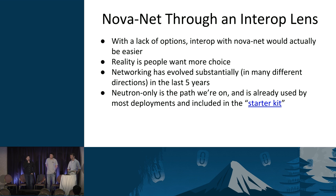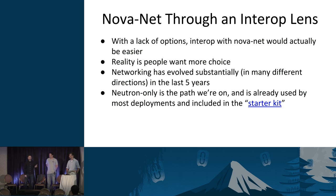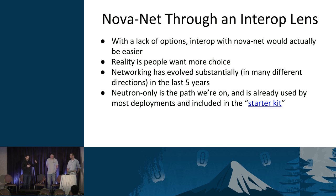From an interop perspective, Nova Network was actually really good — which is part of what makes this whole thing difficult. Through the development of OpenStack, we have to balance the innovation angle with the fact that we want to provide some reasonably standardized thing everywhere you go when you use OpenStack. In the Nova Network days you had very little options, which was great for interop. But the reality is people want more choice. The industry is coming up with new and better ways to do virtual networking, and we want to make that possible. Neutron is the way forward, and now we need to take that innovation but still provide something standardized for interoperability.